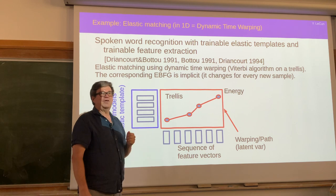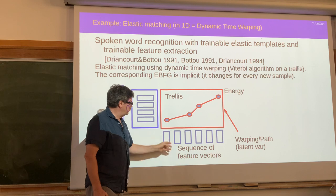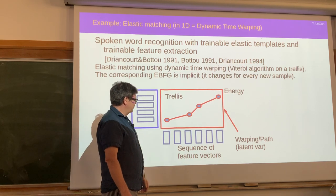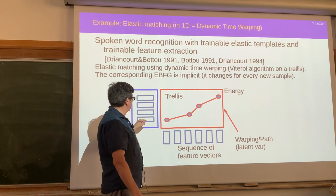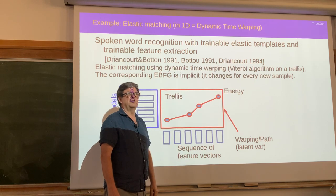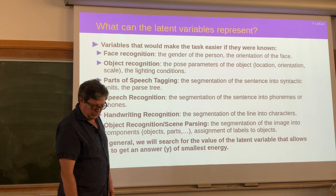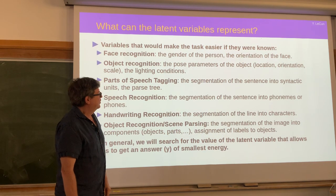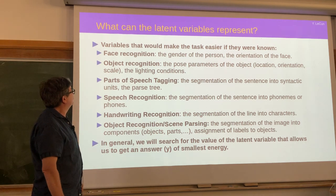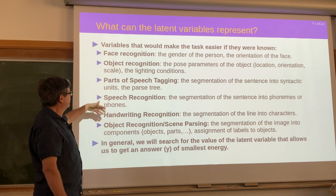You can backpropagate gradients through this warping function. If you have a convolutional net that produces those vectors, you can train the system so that the net makes its vectors as close as possible to the reference ones by propagating gradients through the warping function, which is simple to do. These things have been used for a long time and are easy to understand as latent variable models of a particular type, used for handwriting and speech recognition.